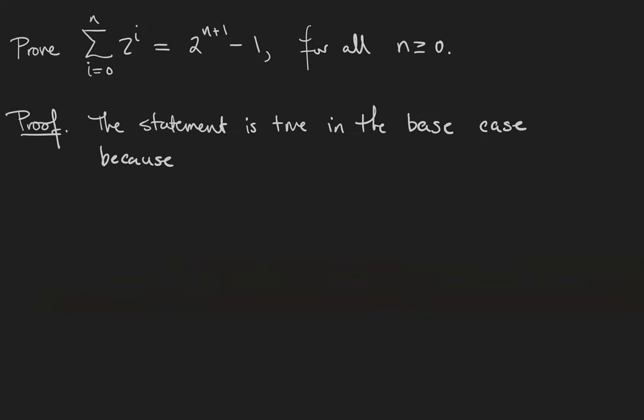I'm going to show you three kinds of proof by induction. The first involves a summation. Remember that the sigma symbol means the sum of all powers of 2 from 0 to n. So this is 2⁰ + 2¹ + 2² + ... + 2ⁿ, and I claim that's equal to 2^(n+1) - 1, and that this equality holds whenever n is at least 0.